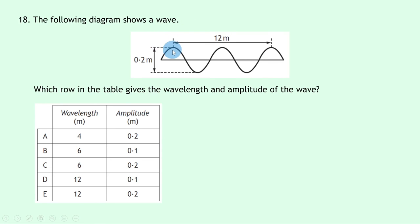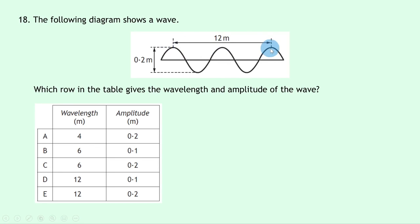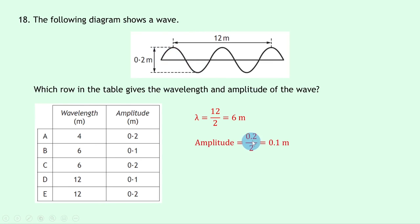Question 18: a wave diagram shows crest-to-crest distance of 12 m and a full vertical height of 0.2 m. The 12 m spans two wavelengths (crest to crest to crest), so wavelength λ = 12/2 = 6 m. Amplitude is half the vertical height: 0.2/2 = 0.1 m. The answer is B.